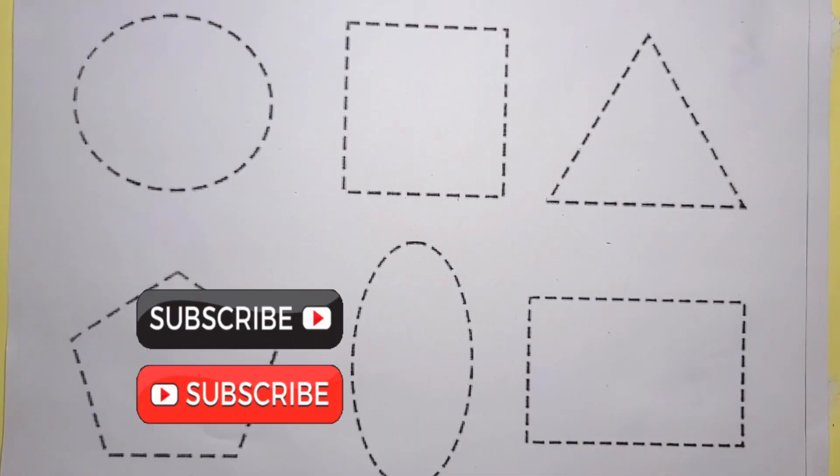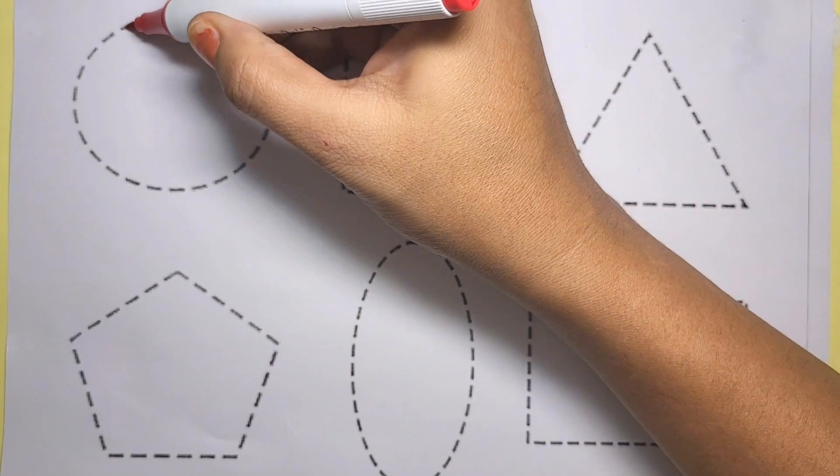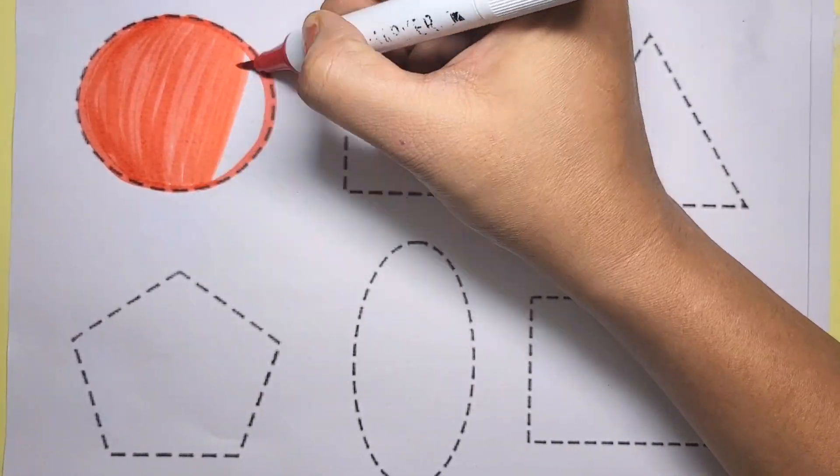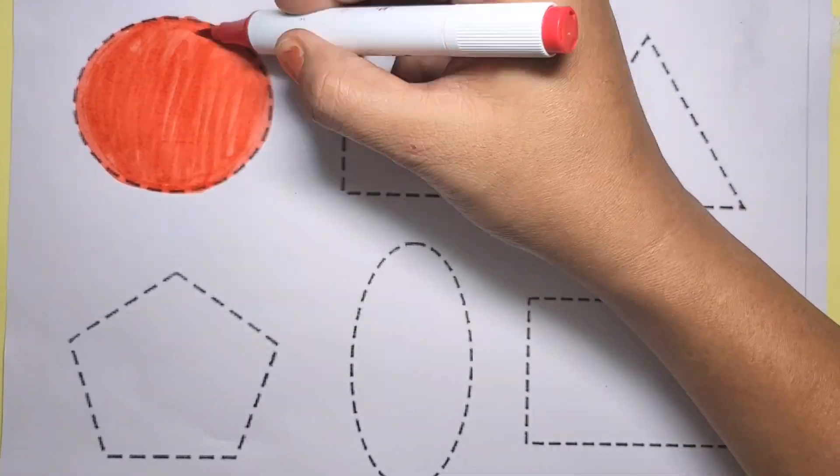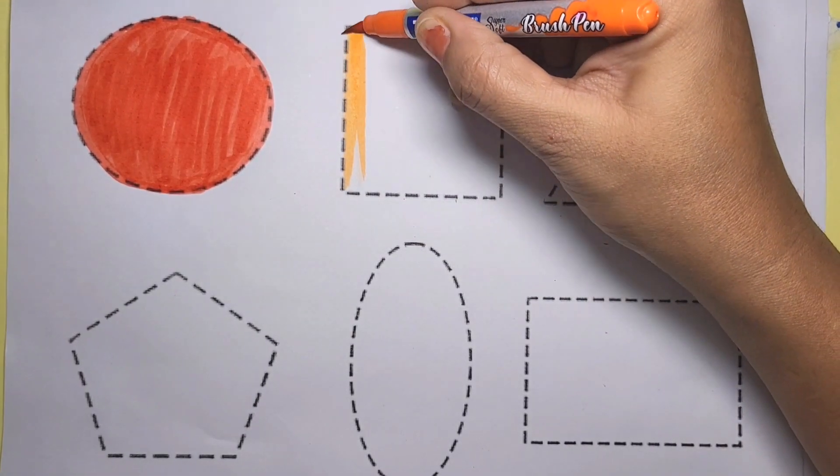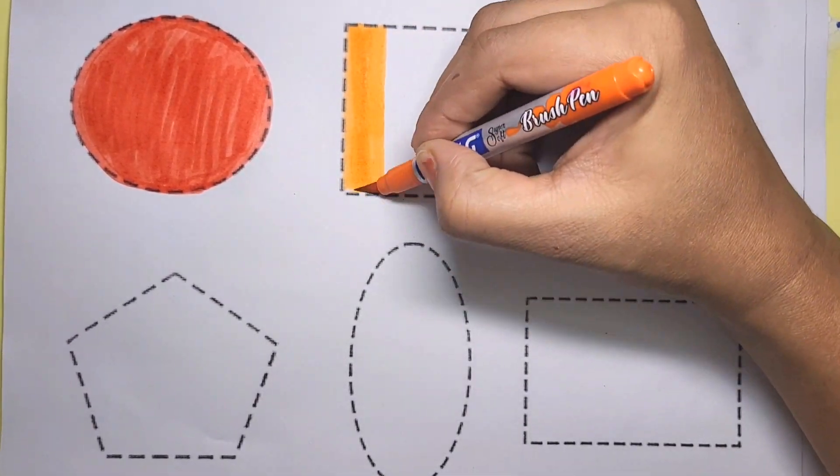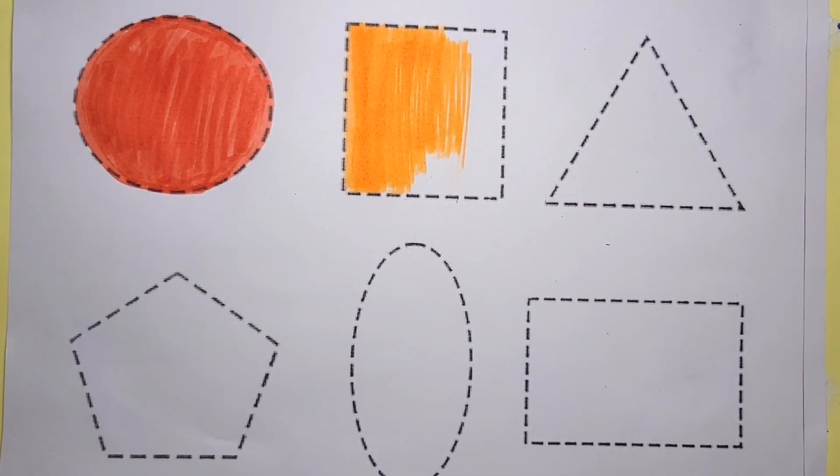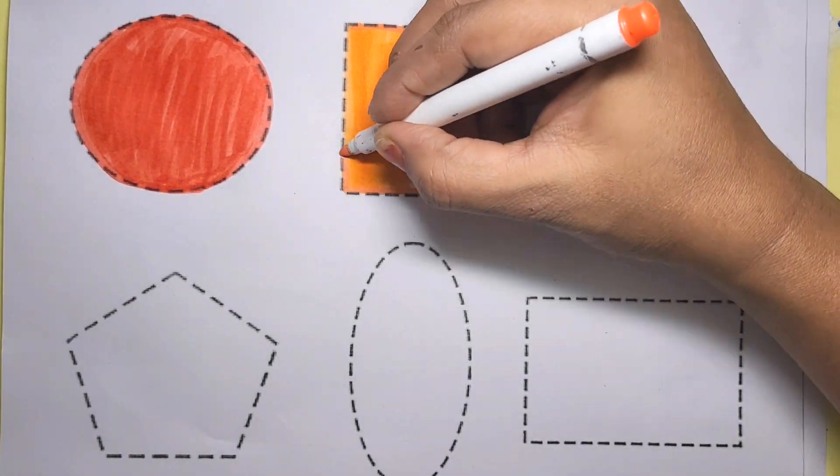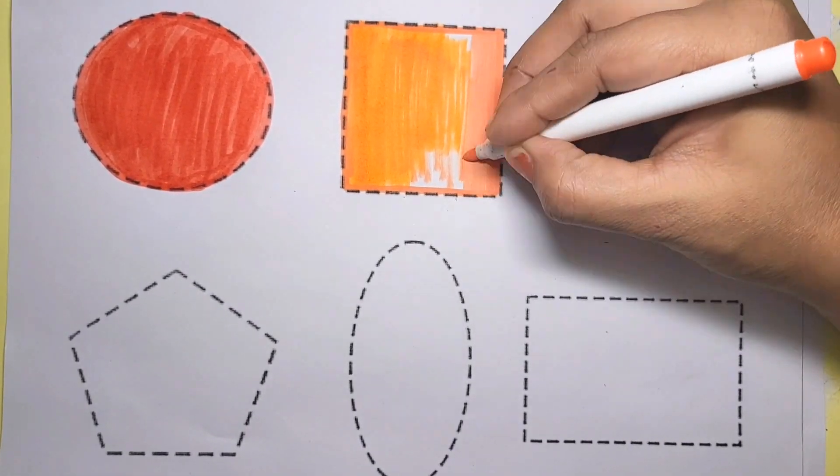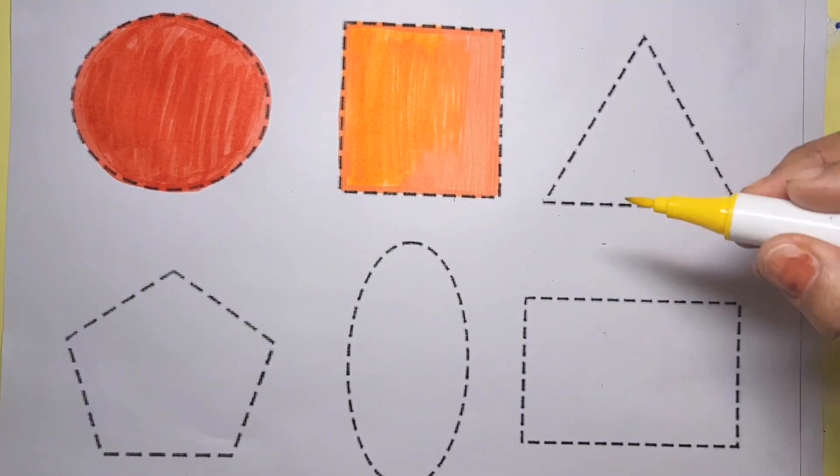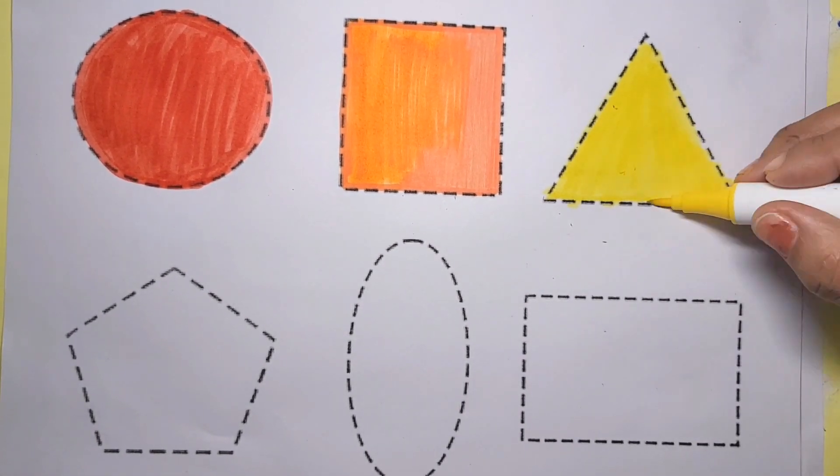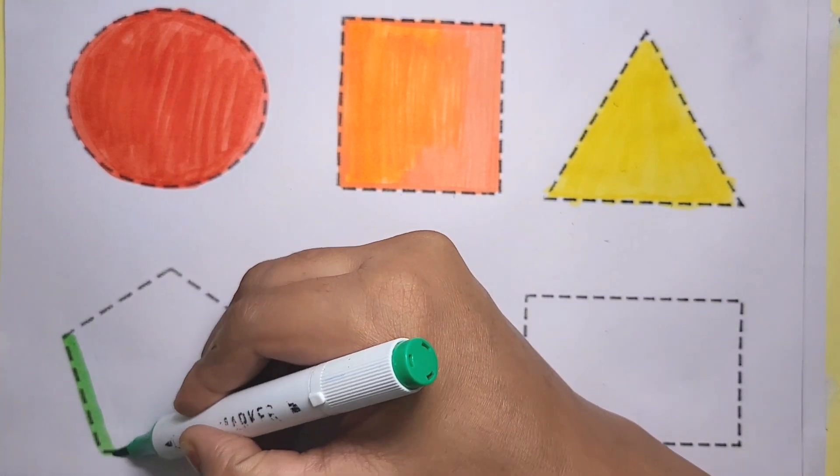Red color with circle. Square, orange color. Yellow color triangle. Pink color pentagon, green color.